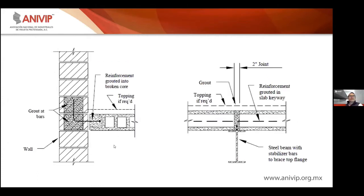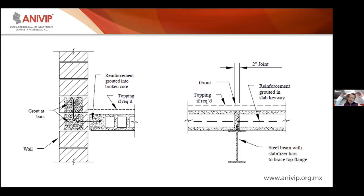Me gusta más la conexión de la izquierda, donde conectamos con barras que hay que calcular dependiendo del cortante en el sitio. Aquí se combina, por ejemplo, con trabes metálicas: la placa va por encima de la trave metálica cuando no tenemos restricción arquitectónica en los peraltes del sistema de losa. Es muy válida y se utiliza mucho este tipo de conexión donde la placa va apoyada sobre el patín superior de la trave metálica.